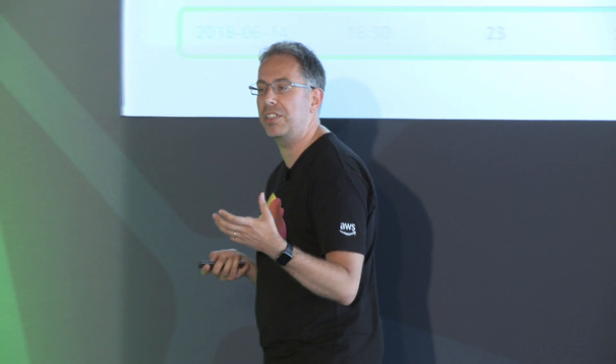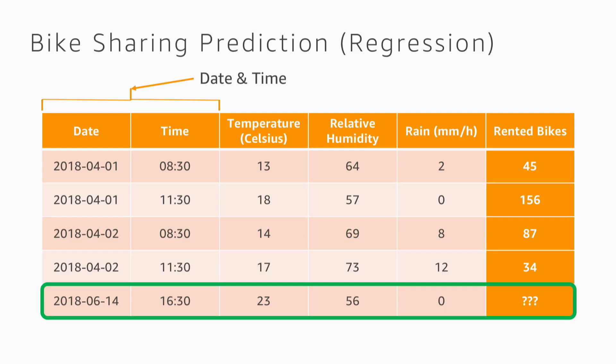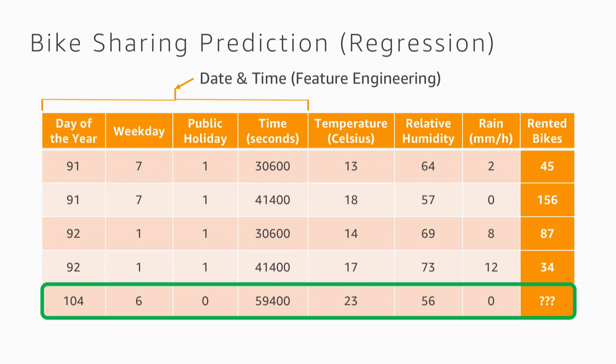With machine learning you can use a linear model and optimize it, but before starting you should look at the data through human eyes. For example, the dates here tell us a lot — whether it's a Sunday or Monday makes a very different use case for bikes: commuting versus pleasure. Weather also influences things a lot, so that must be factored in.